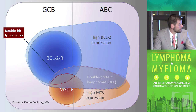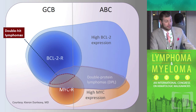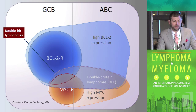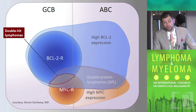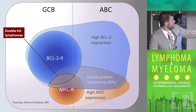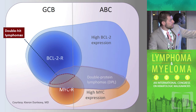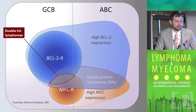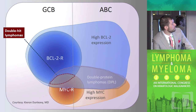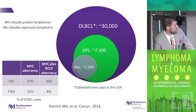This is a slide I borrowed from Kieran Dunleavy at the NCI. He's a much better graphic artist than I am, but I think it's important to remember who are the double expression or double protein — and I use those terms interchangeably — diffuse large B-cell lymphomas, versus who are the double hit lymphomas. It's important to remember that double hit lymphomas truly fall in the GCB category, while double protein lymphomas probably go into both GCB and non-GCB sides and are a much larger population. That Venn diagram is helpful to conceptualize these patients.